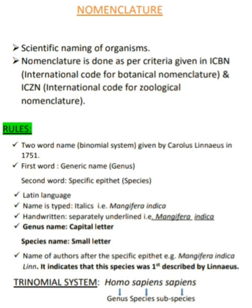Similarly, a trinomial system is also used. In the binomial system two-word names are used, while in the trinomial system three-word names are used. For example, Homo sapiens sapiens — where Homo sapiens is the scientific name of human beings — uses genus, species, and subspecies. However, the trinomial system is not used as frequently as the binomial system.